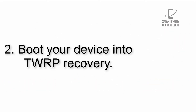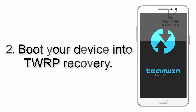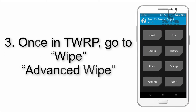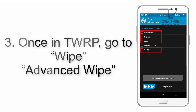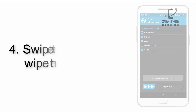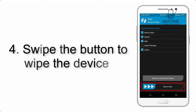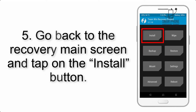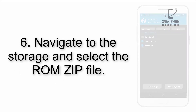Step 2: Boot your device into TWRP recovery. Once in TWRP, click on Wipe, then Advanced Wipe, and select the checkboxes as shown in the image, excluding internal storage. Step 4: Swipe the button to wipe the device.